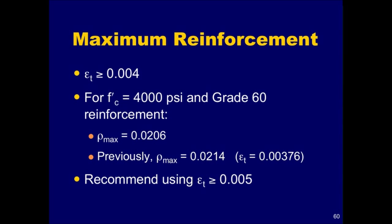Previously, limits on reinforcement were based on a percentage of the balanced reinforcement ratio. In particular, the former limit prior to the 2002 edition of ACI 318 was 75 percent of the balanced reinforcement ratio. Using a strain compatibility analysis for 4,000 psi concrete and grade 60 reinforcement, the maximum reinforcement ratio according to the latest ACI requirements is 0.0206. Previously this limit was 0.0214, which corresponds to a strain equal to 0.00376. It will be shown later that it is almost always advantageous to limit epsilon sub T to a minimum of 0.005, even though higher amounts of reinforcement producing lower tensile strains are permitted.